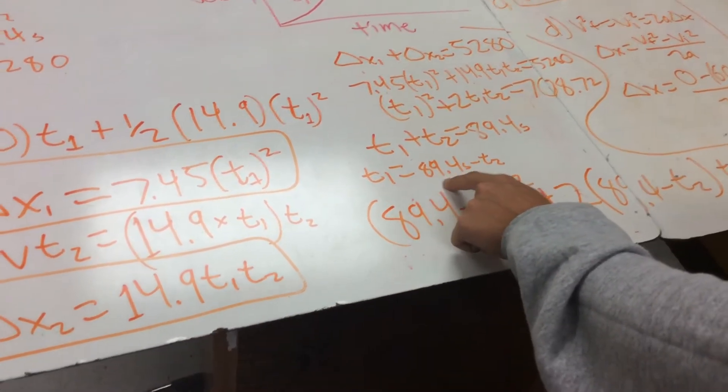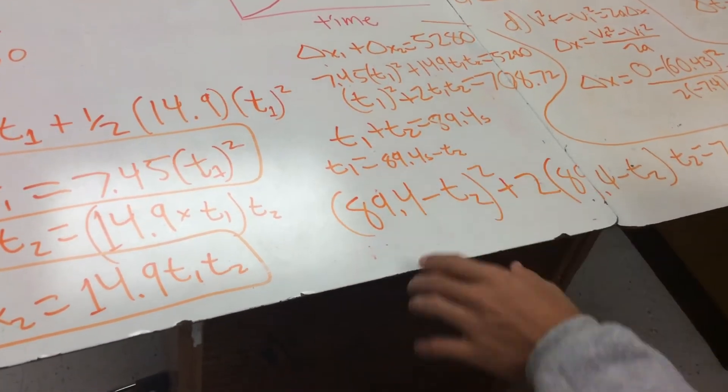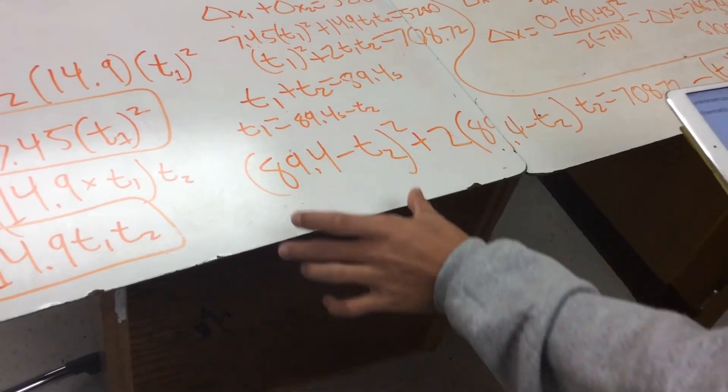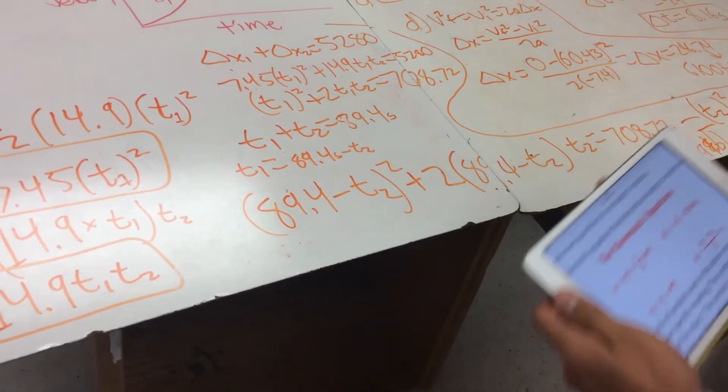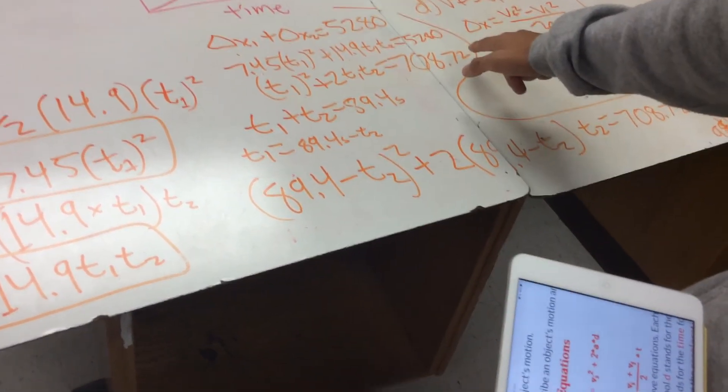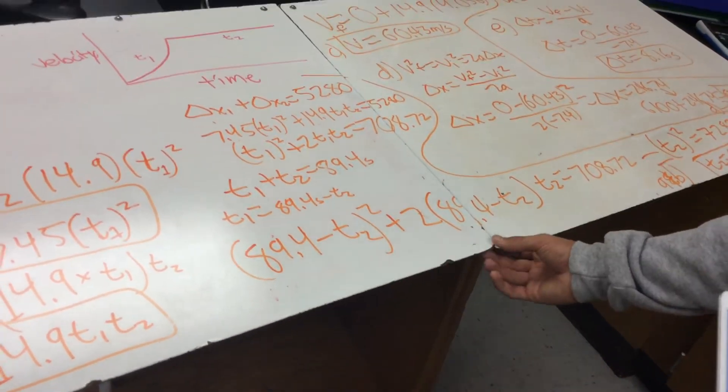So, right here, t1 equals 89.4 seconds minus t2. So we're going to plug that chunk in for t1, everywhere you see t1 in this big equation. So you'll get this long equation right here.